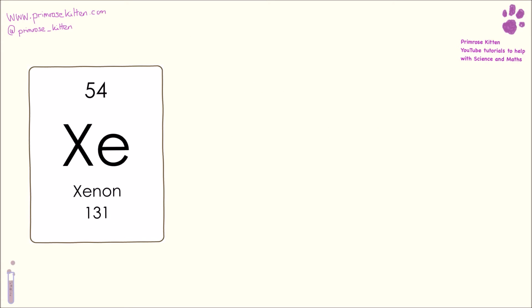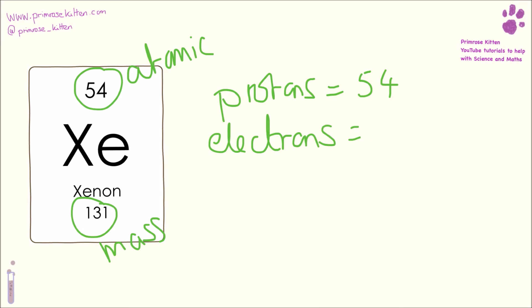Here we have xenon. Here is the mass number, here is the atomic number, so protons equal 54, electrons equal 54, neutrons equal 131 minus 54, which equals 77.